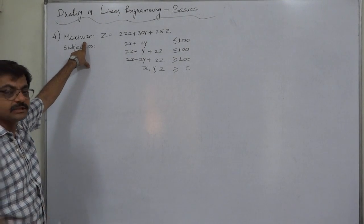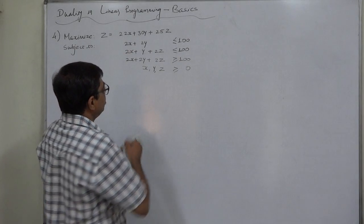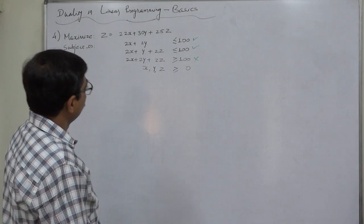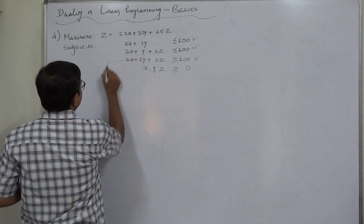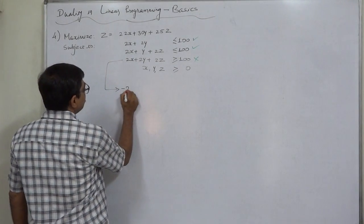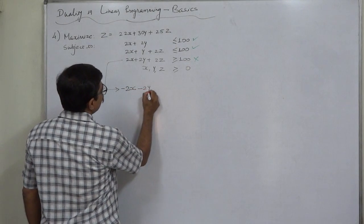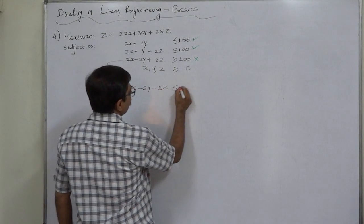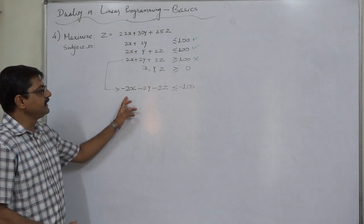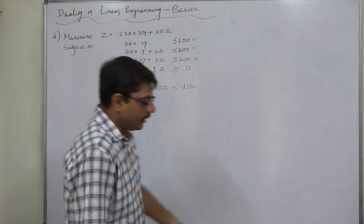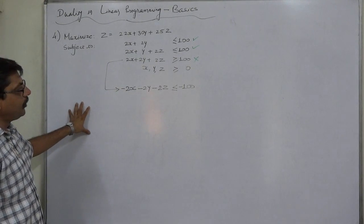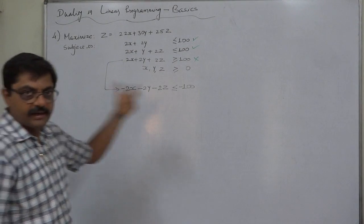The objective is maximization, so the sign of all three constraints must be less than or equal to. It is so in the first and second cases, but not in the third. We have to rewrite the third constraint with the less than or equal to sign, so it becomes: minus 2x minus 2y minus 2z less than or equal to minus 100. Please be careful — there are many negative signs. Now the primal is in the correct form and we can write its dual.